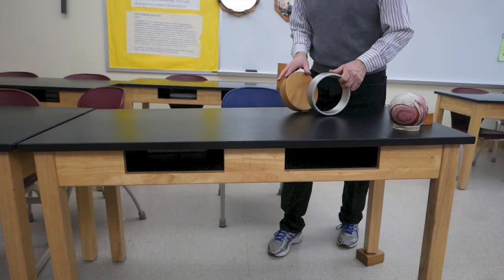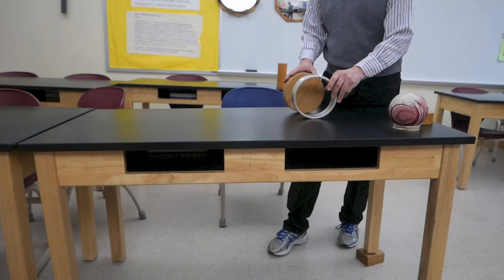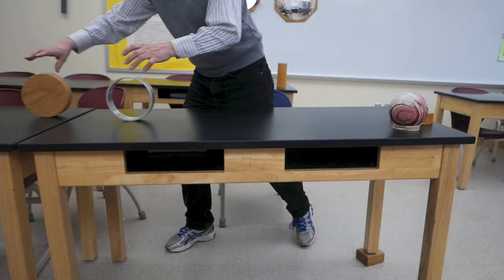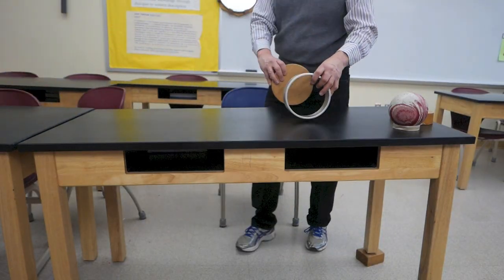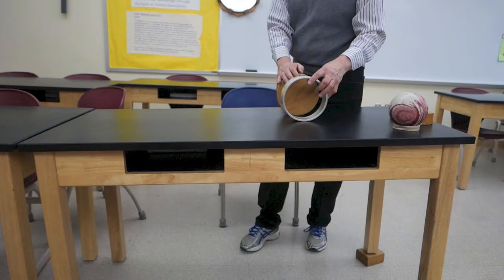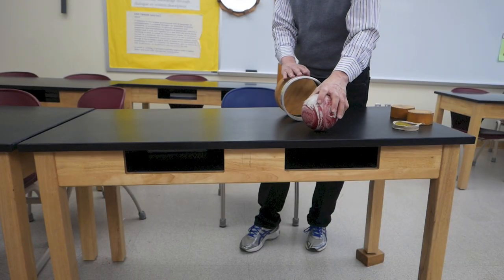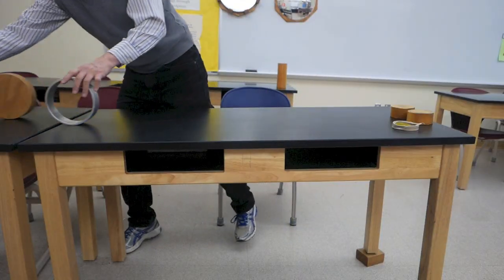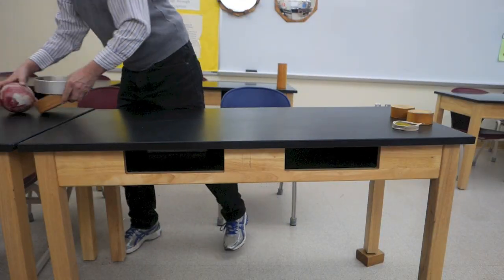Now let's apply this to objects that roll. These are two standard objects sold by science companies — we see that the one with more mass in the center rolls a little bit quicker. Adding a third object: the ball has more of its mass towards the center than the cylinder does, so it's going to accelerate even quicker.